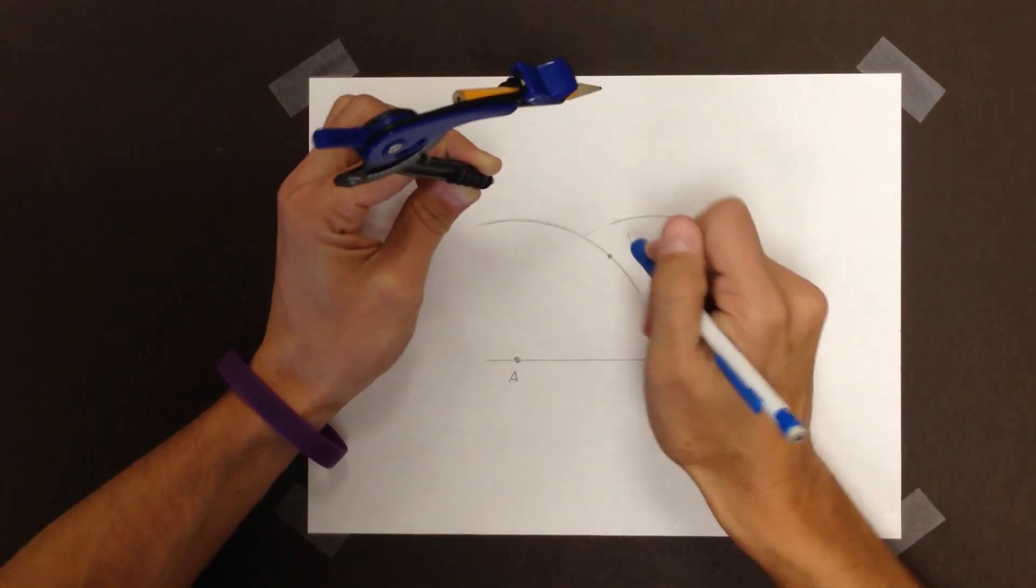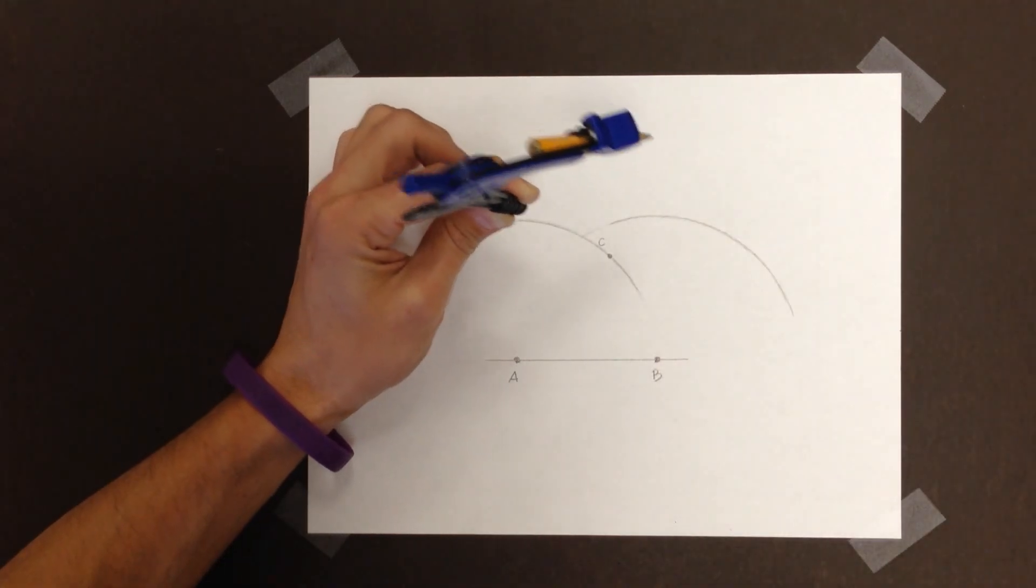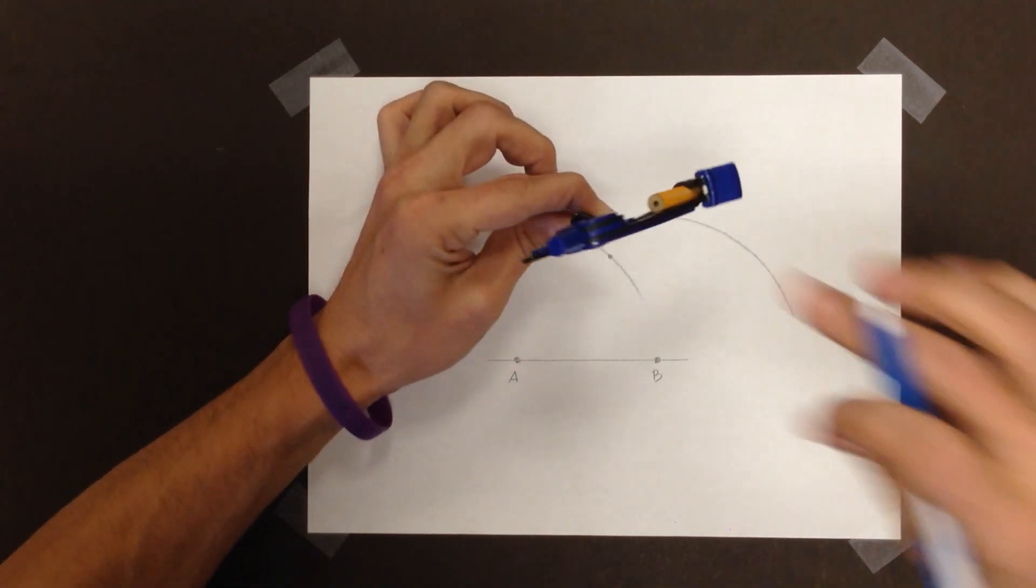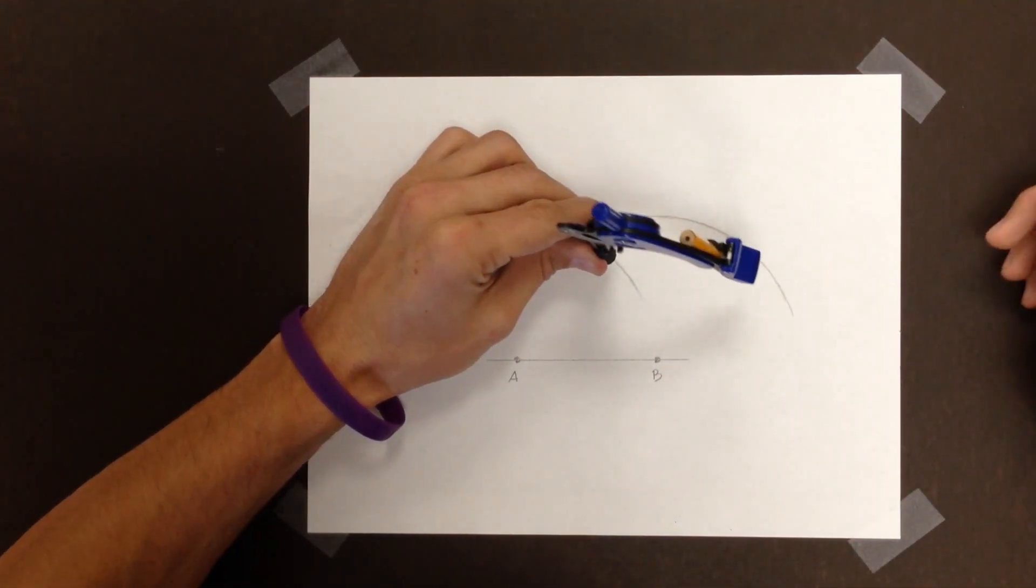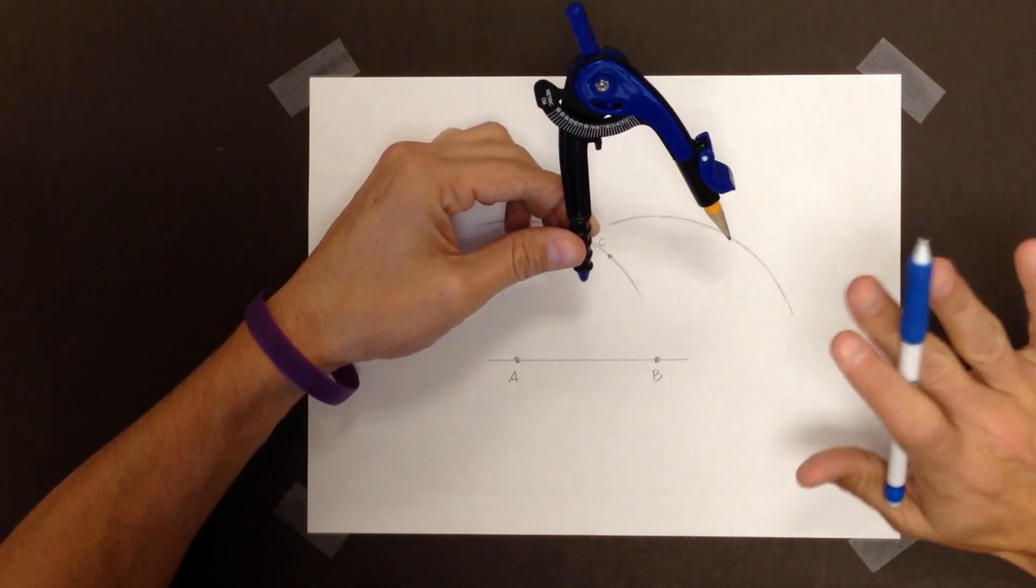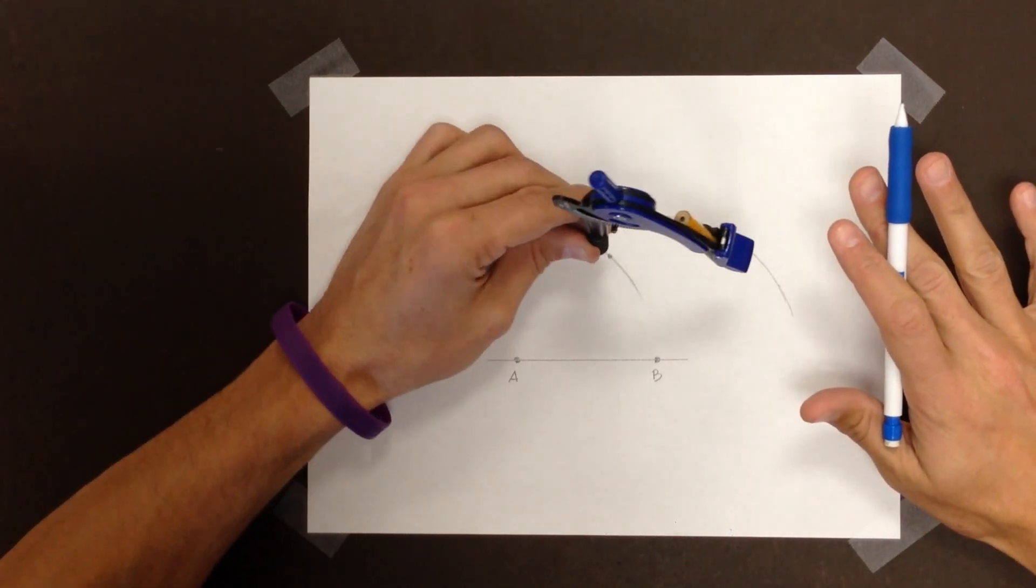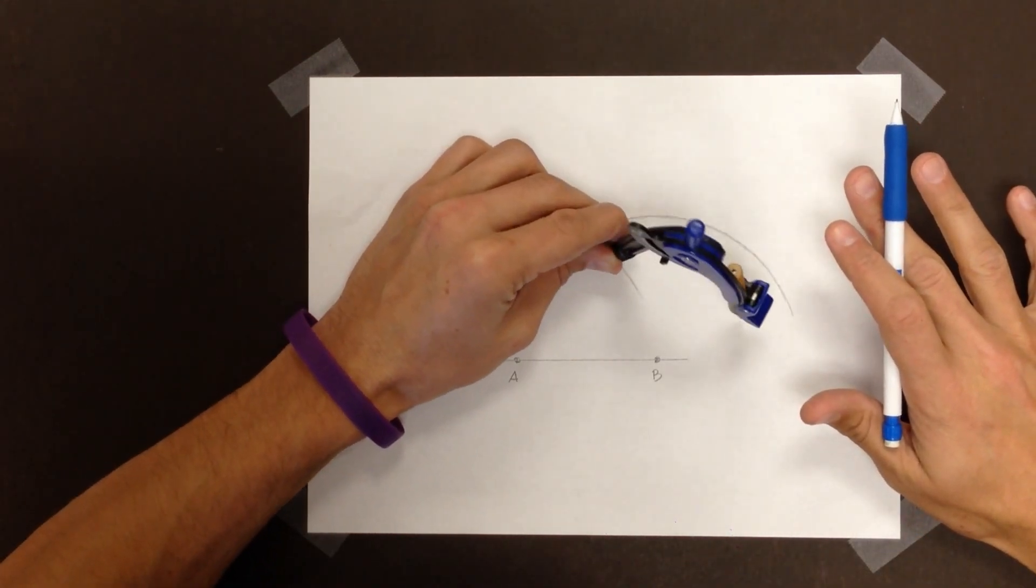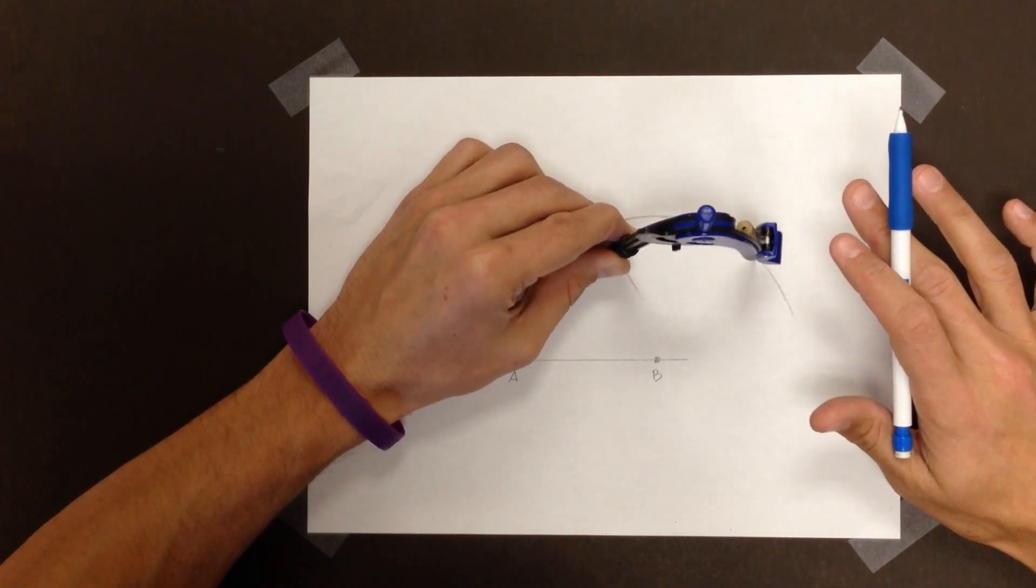I'll call that C. I'll put the non-pointy end on C. And again, I have not changed this length because I need all the sides to be the same. I'm going to draw an arc that intersects the second one I drew.